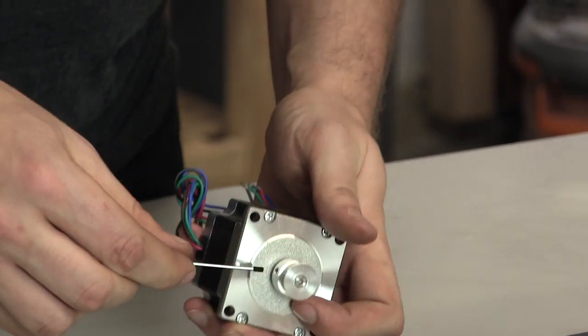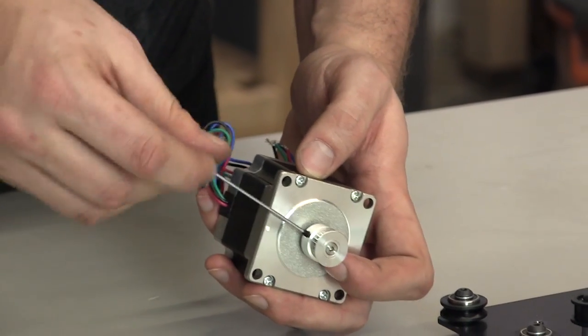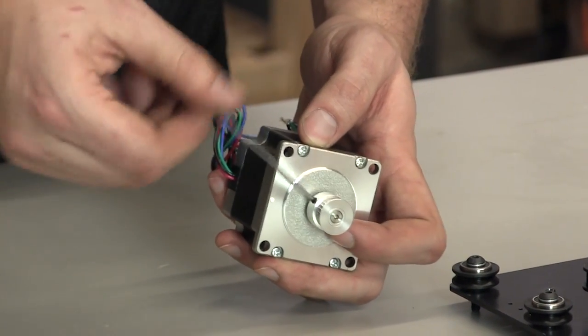There's a rounded part of the set screw and that goes in first. Put these in slowly and make sure not to cross thread them as they're very fragile.